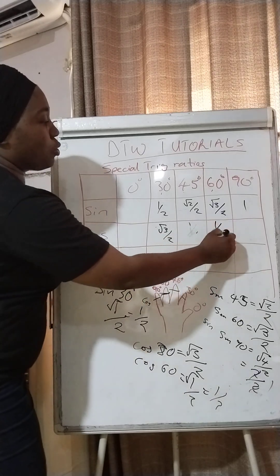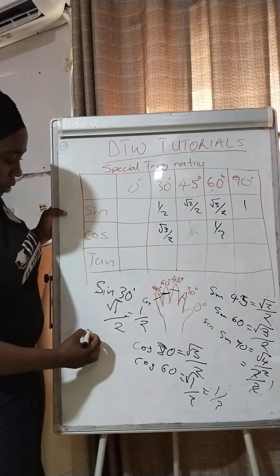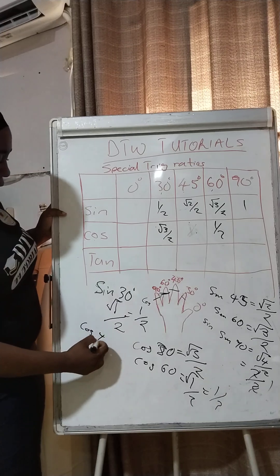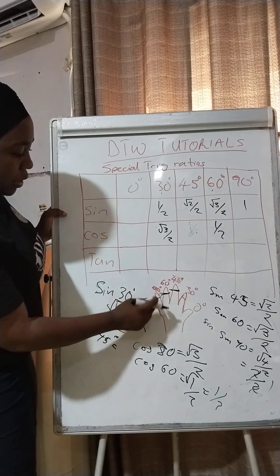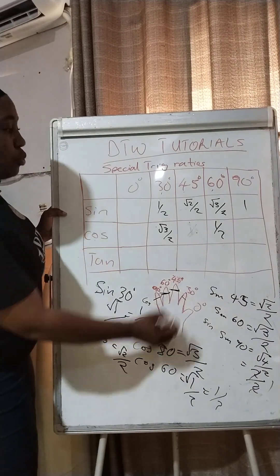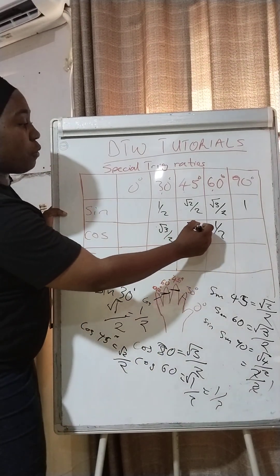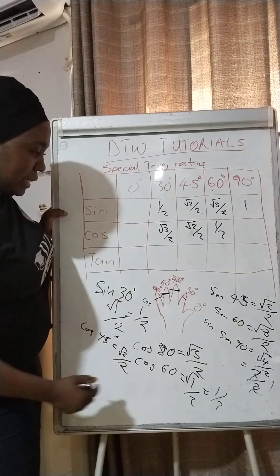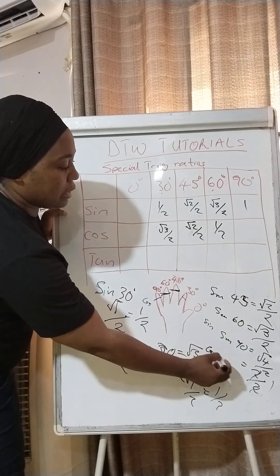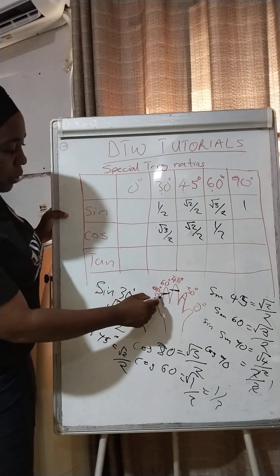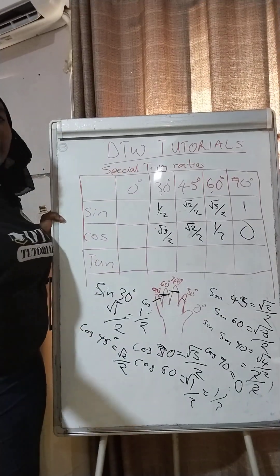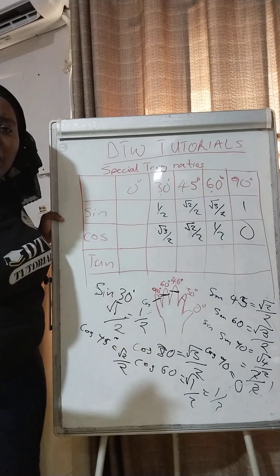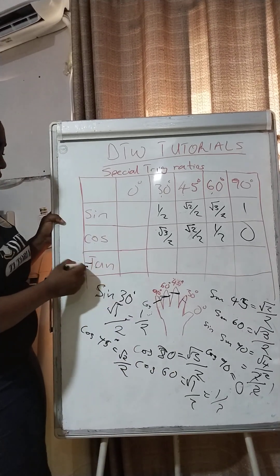What is cosine 45? When we cross the 45-degree finger, we have two fingers remaining on the left, so that's the square root of two over two. What is cosine 90? When we cross the 90-degree finger there's nothing left — zero. So cosine 90 is zero.